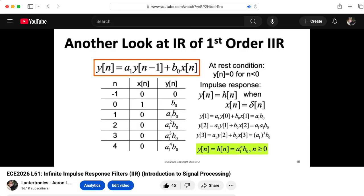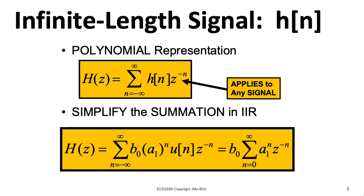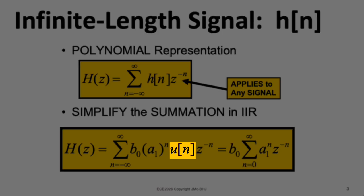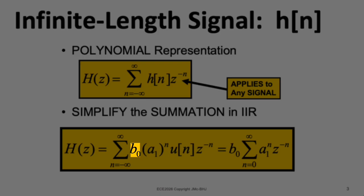In a previous lecture, we computed the impulse response of a simple first order IIR filter. If we plug that into our Z-transform formula, we see there isn't really a difference between the two-sided and one-sided transforms in this case. Because our impulse response for that particular case starts at n equals zero, the two transforms are equivalent. Here I've also taken the b_0 and pulled it out in front.